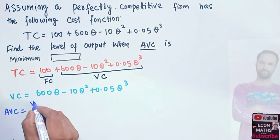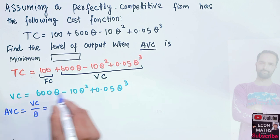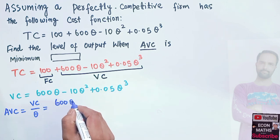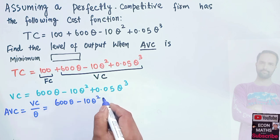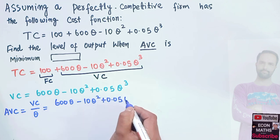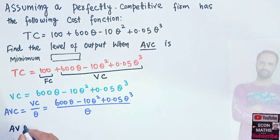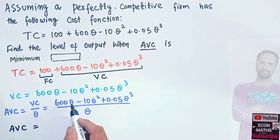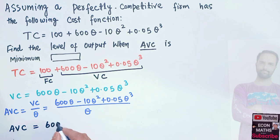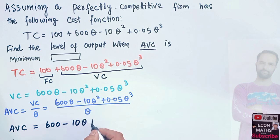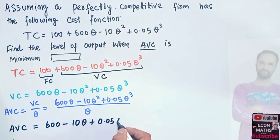Average variable cost is simply variable cost divided by output. The variable cost function is 600q minus 10q squared plus 0.05q cubed, divided by q. This gives us AVC equals 600 minus 10q plus 0.05q squared, since q cancels from each term.